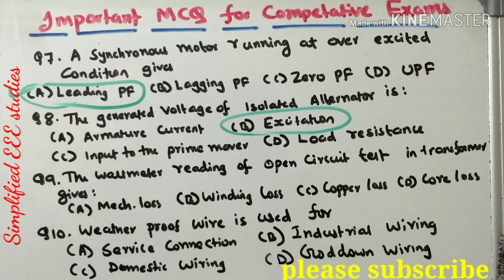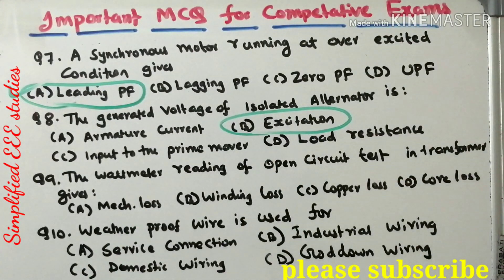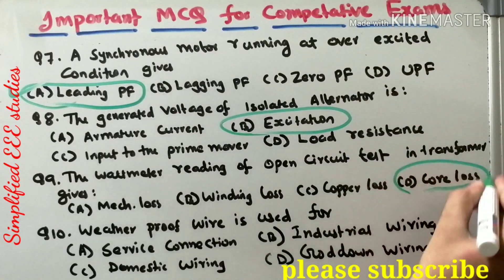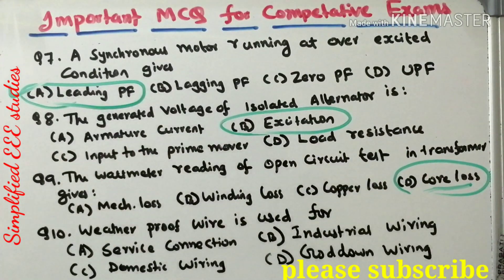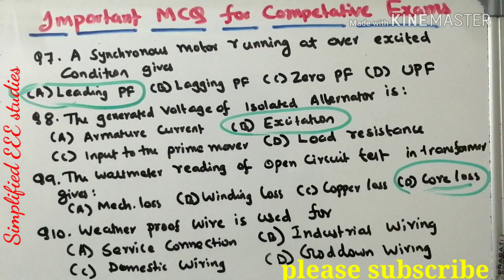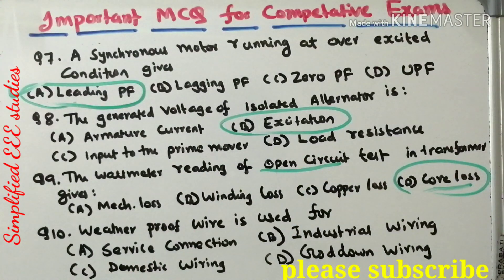Question 9: the wattmeter reading of an open circuit test in a transformer gives what? Open circuit test is mainly applied to the primary winding while the secondary winding is kept open. The main purpose of conducting the open circuit test is to evaluate the total core loss or iron loss occurring in the transformer. For the short circuit test, we can predetermine the copper loss. The right answer is option D: core loss.